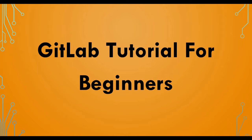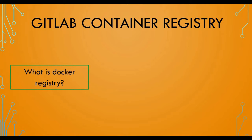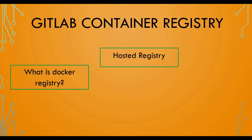Welcome back to the channel. Today we continue the GitLab tutorial for beginners, and we're going to talk about GitLab Container Registry. You may be wondering what that is — I recommend checking my previous tutorial where we talked about Docker Registry. A Docker registry is a place where we store and distribute Docker images, and the classic example is a hosted registry like Docker Hub.